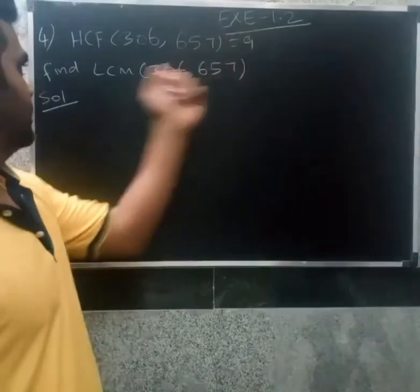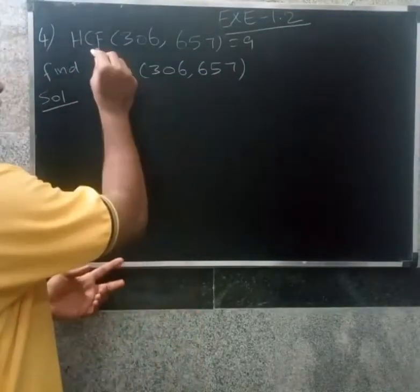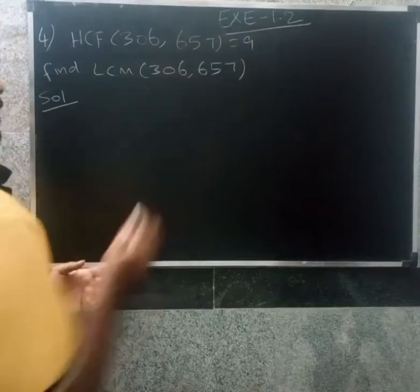Okay, next we are going to discuss exercise 1.2, the fourth question. HCF of 306, 657 equals 9, find LCM of 306, 657.